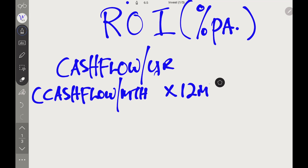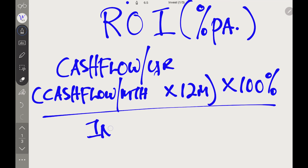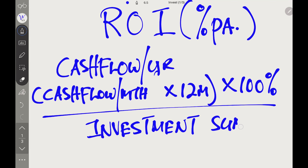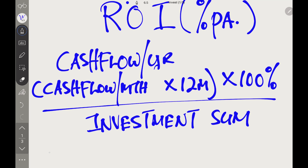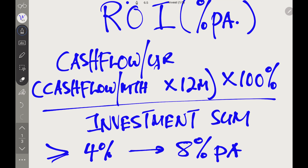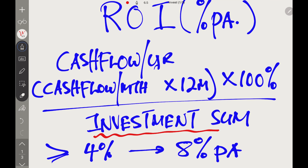ROI is the return you're going to get back in a certain percentage on a per annum basis. Using this, you'll be able to calculate how much cash flow you need to replace your income. The ROI formula is: cash flow — if received monthly, that's cash flow per month times 12 months, times 100 — divided by your investment sum.